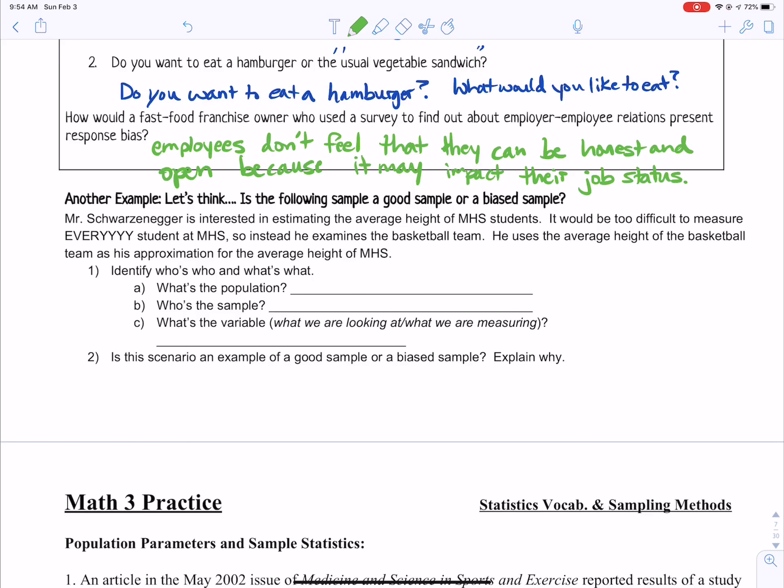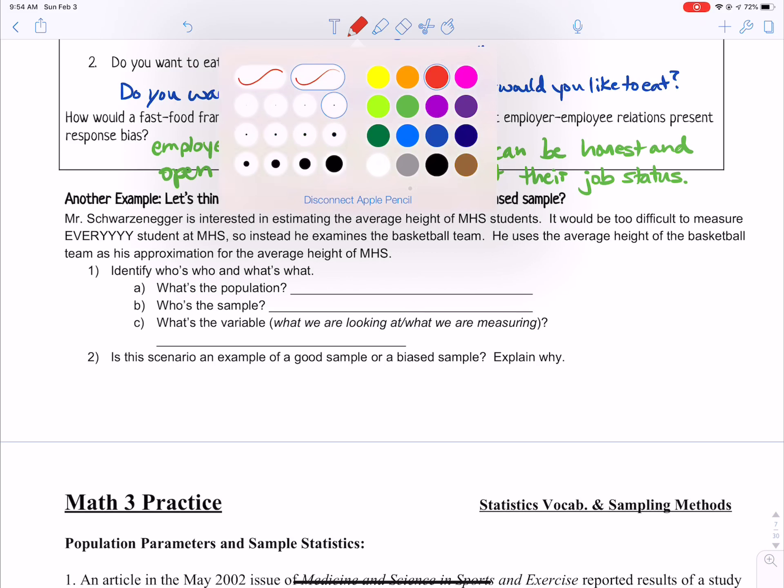So another example, let's think, is the following sample a good sample or a biased sample? Mr. Schwarzenegger is interested in estimating the average height of Mooresville High School students. It would be too difficult to measure every student at Mooresville High School. So instead, he examines the basketball team. He uses the average height of the basketball team as his approximation for the average height of Mooresville High Schools.